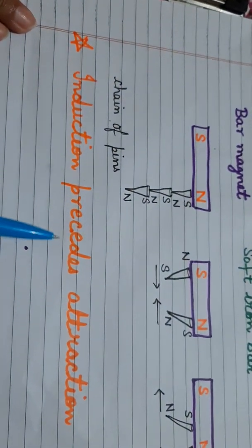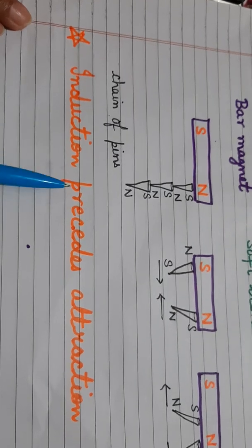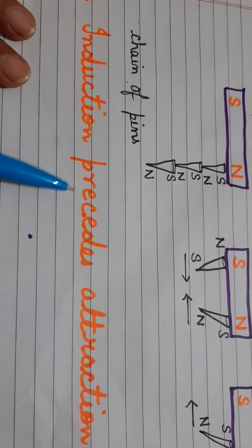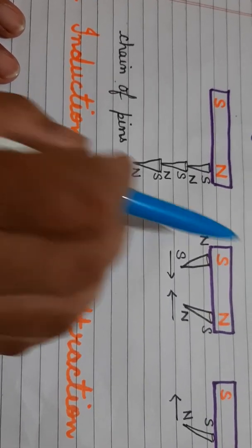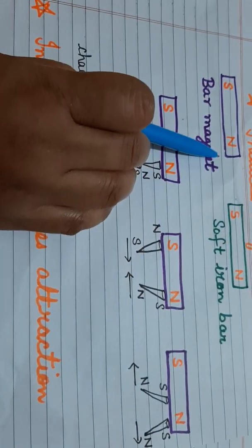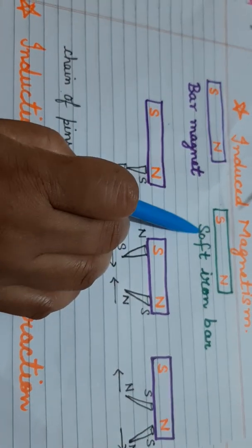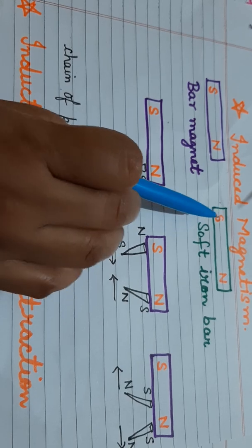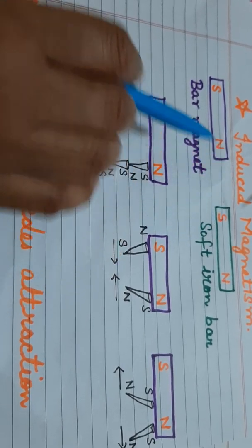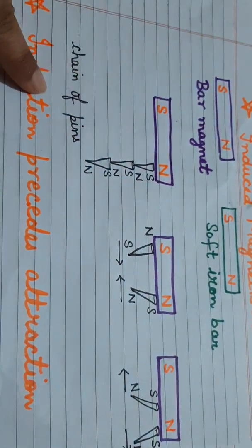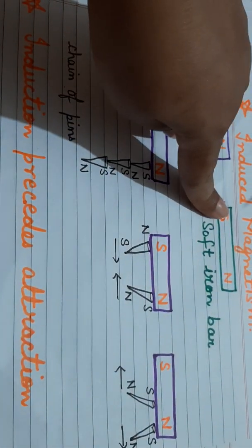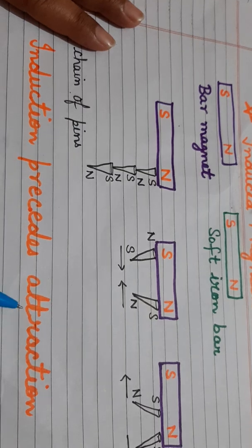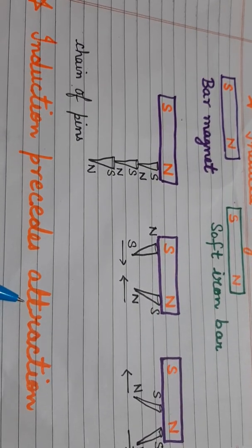There is one very important question: why does induction precede attraction? The meaning is that whenever you place a soft iron bar near a bar magnet, first the soft iron bar attains polarity — that is, it starts behaving like a magnet due to induction — and only after that does it show the property of attraction.